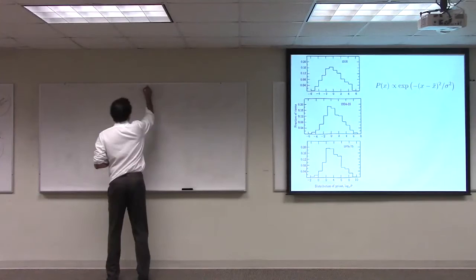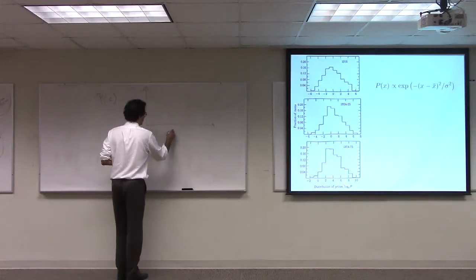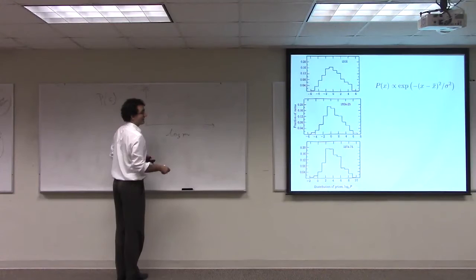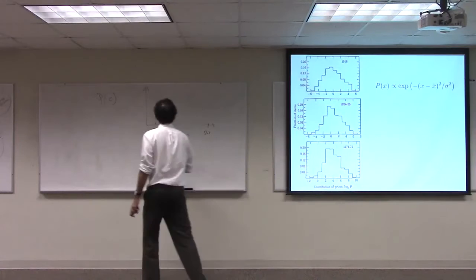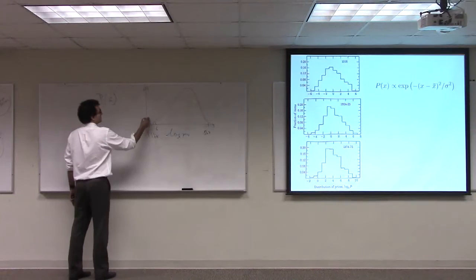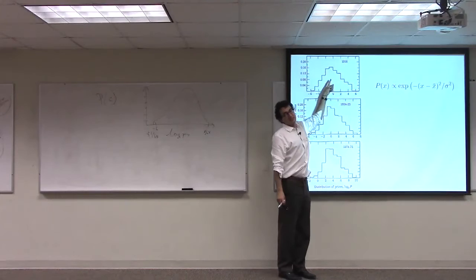And what he does is he plots the distribution of prices, the probability that a good in the Sears catalog has some cost C. And he plots this on a log scale. So this is log price. And in fact, he uses log base 2. And this ranges from negative 6, that's 1 over 64, to positive 6, 64 dollars, in the 1916 case. And he plots the distribution of goods here.